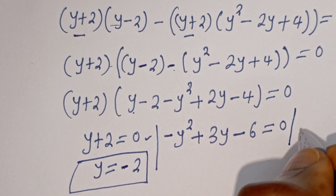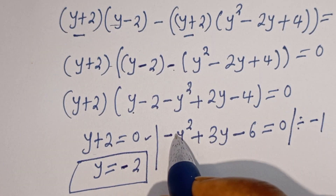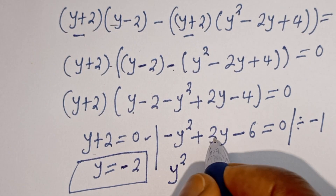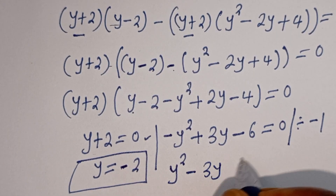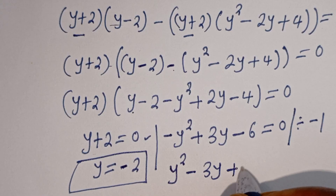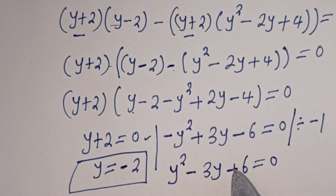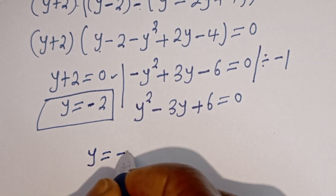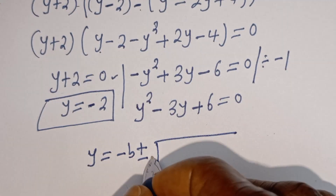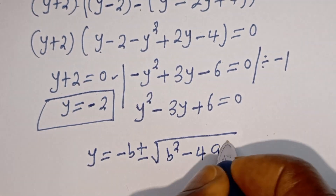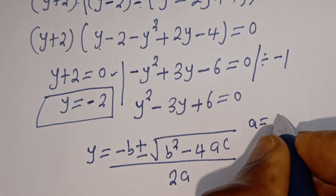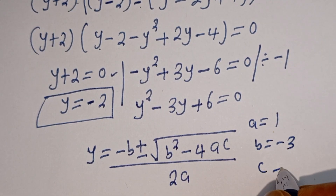From the second case, let's divide everything by minus 1. We get y squared minus 3y plus 6 equals 0. This is a quadratic equation, which can be solved using the quadratic formula: y equals minus b plus or minus square root of b squared minus 4ac, divided by 2a. From this equation, a equals 1, b equals minus 3, and c equals 6.